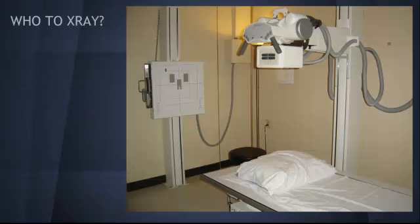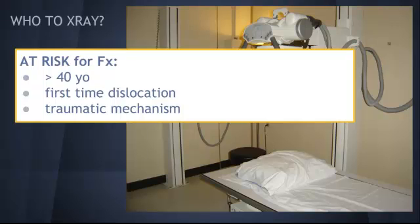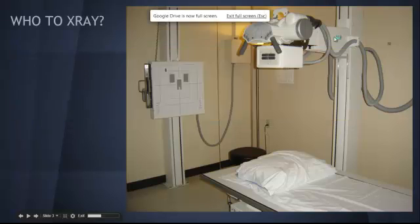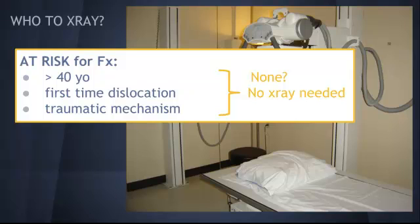Let's talk about who we want to get a pre-reduction film on. People that are at risk for fractures are those greater than 40 years old, first-time dislocations, and some kind of traumatic mechanism. Studies have shown that if you don't have any of these risk factors and there's no other gross deformity, bruising, edema, or hematoma, there's no real need for an X-ray. These rules have a 96.6% negative predictive value for fracture if they're not present.